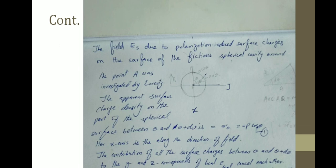The apparent surface charge density on the part of the spherical surface between θ and θ + dθ is σ(θ) = −P·cosθ. The spherical cavity has been rotated from the original diagram, so positive surface charge density appears on the bottom and negative on the upper side, and the electric field points from lower to upward along E-naught. Therefore σ(θ) has maximum value −P·cosθ, where the x-axis is along the direction of the field. The contributions of all surface charges between θ and θ + dθ to the y and z components of E_local cancel each other; only the x-component affects the result.